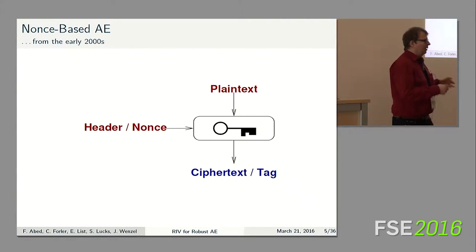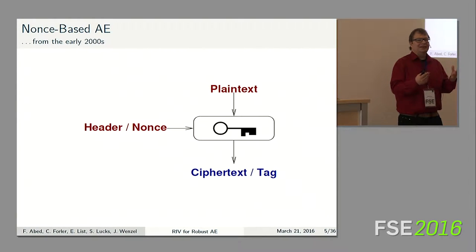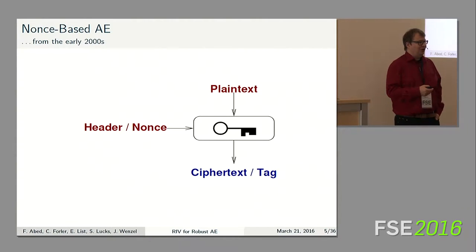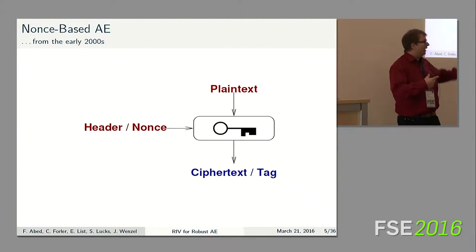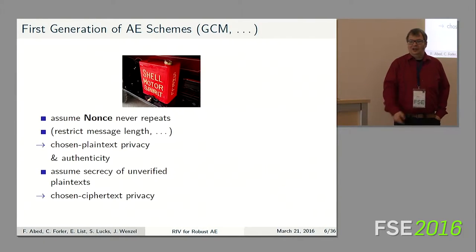We already know how to formalize this: we have a plaintext, we encrypt it and get a ciphertext with some extra information called an authentication tag. To make this a deterministic function we include a nonce, which captures the internal state or randomness. We may also need to authenticate context information, which is what the header input is for.